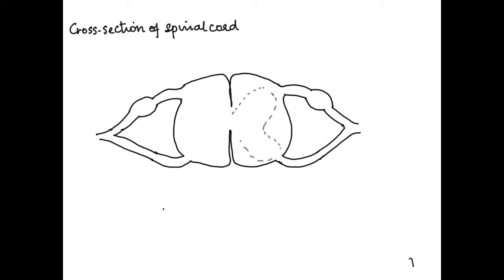Inside the spinal cord, we draw an H-shaped structure. This H-shaped structure represents the gray matter of the spinal cord. In the center there is a small cavity with cerebrospinal fluid — that is the central canal. Now let's label the parts.